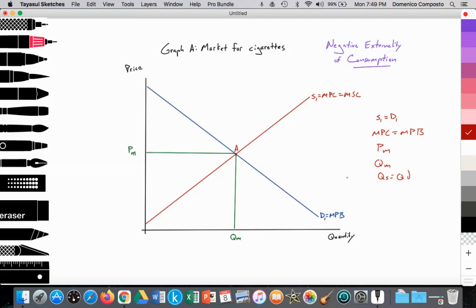But there is a social benefit that is less than the private benefit. So we're going to go ahead and illustrate that. This reflects that society would like less consumption of cigarettes. We'll place it right about here. And let me go ahead and change the color. We'll use blue just for consistency.